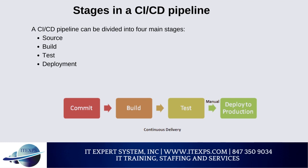A CI/CD pipeline can be divided into four main stages: Source, Build, Test, and Deployment. Each subsequent stage must be completed before continuing to the next. All stages are continuously monitored for errors or discrepancies, and feedback is provided to the delivery team. In an Agile context, each development — whether bug fix or feature improvement — falls into the CI/CD pipeline before deploying to production.